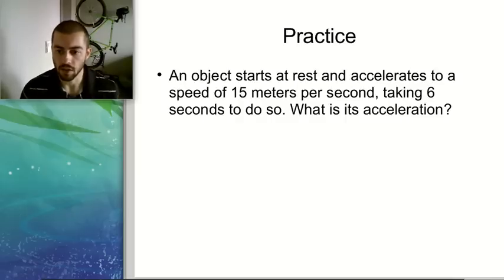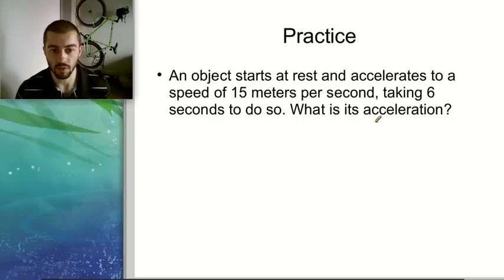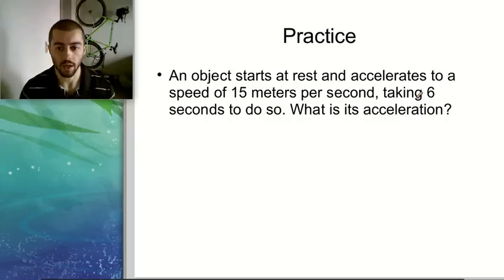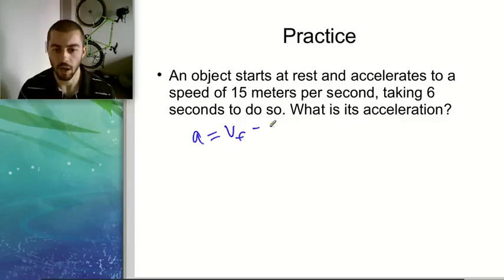We have an object that starts at rest and then accelerates to a speed of 15 meters per second. So we have its final velocity and initial velocity here, and it takes 6 seconds to do that. So what is its acceleration? If you want to pause the video and do this on your own, go ahead. We're going to use the acceleration formula. Acceleration equals final velocity minus initial velocity over time.